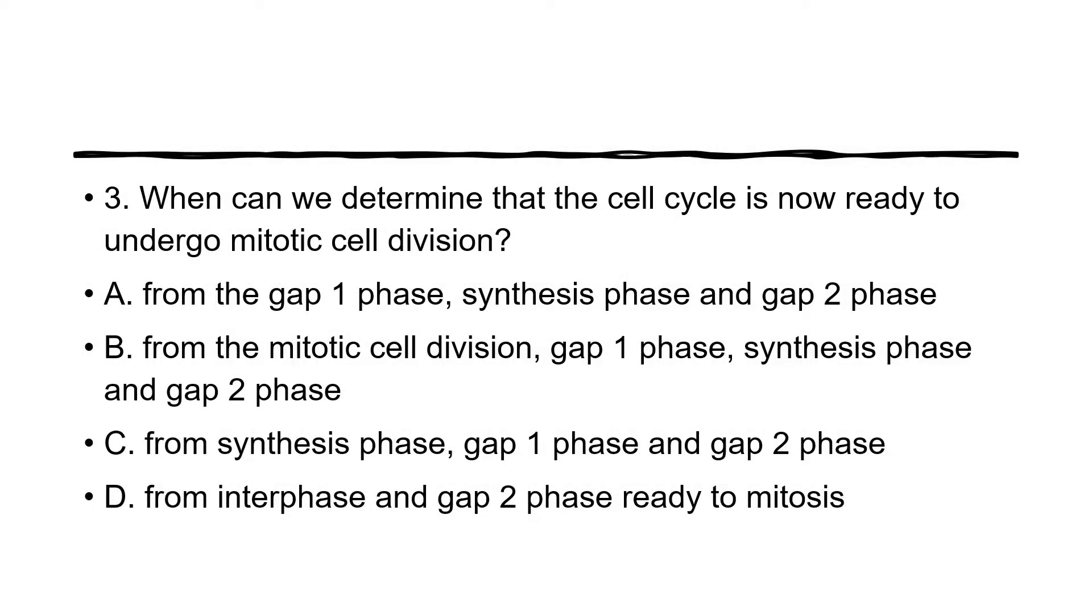Number three: when can we determine that the cell cycle is now ready to undergo mitotic cell division? A. from the gap 1 phase, synthesis phase, and gap 2 phase. B. from the mitotic cell division, gap 1 phase, synthesis phase, and gap 2 phase. C. from synthesis phase, gap 1 phase, and gap 2 phase. D. from interphase and gap 2 phase ready to mitosis.